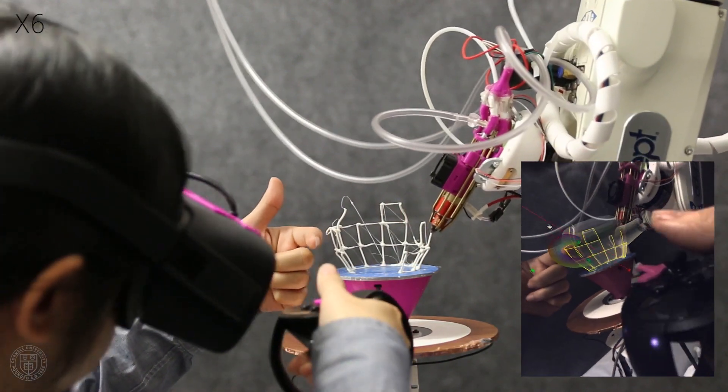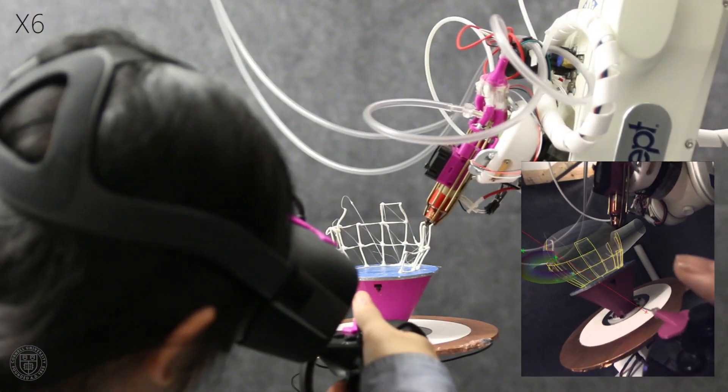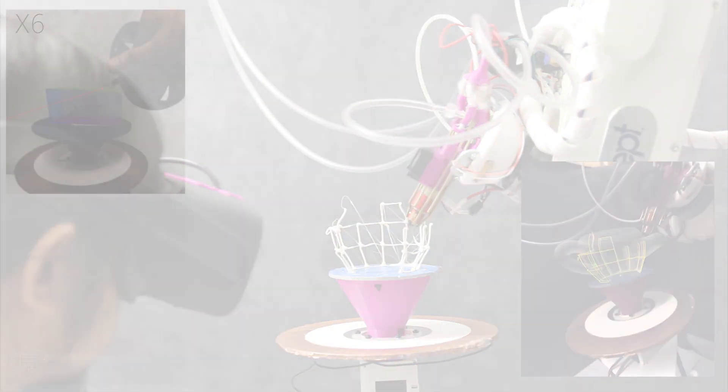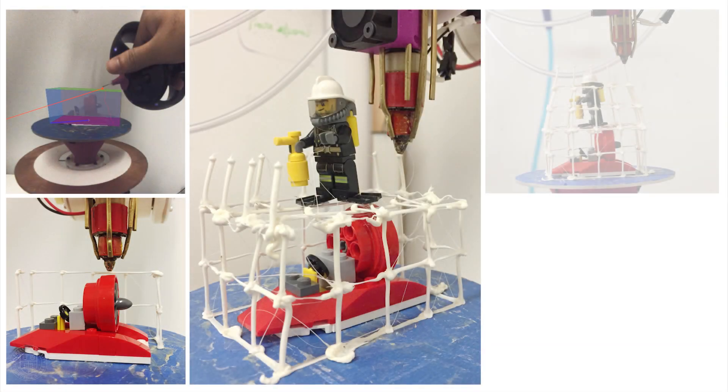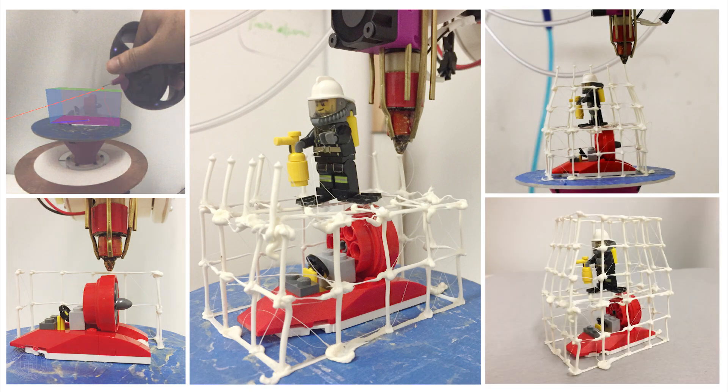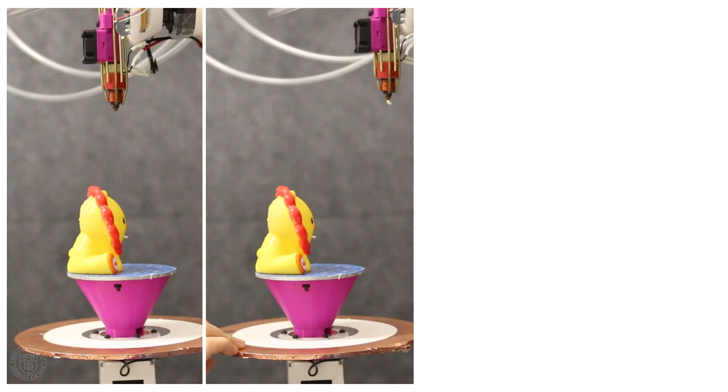With ROMA, users can integrate physical constraints early in the design process, place physical references on top of partial prints to support further designs, and design and print directly onto existing objects.